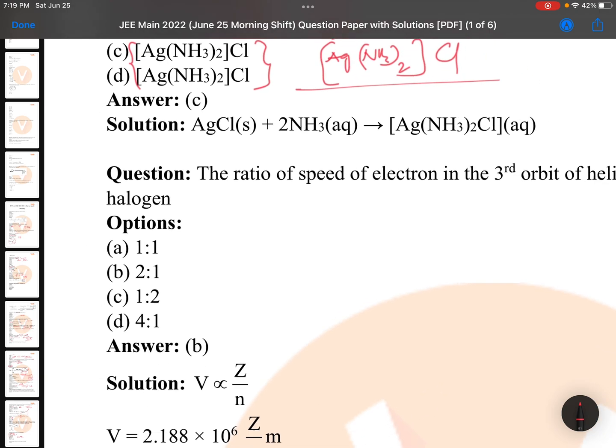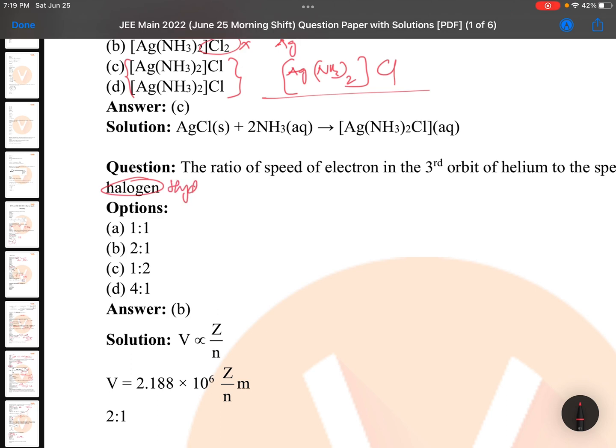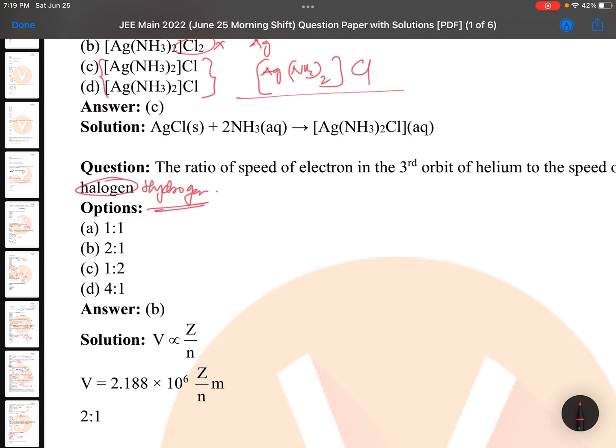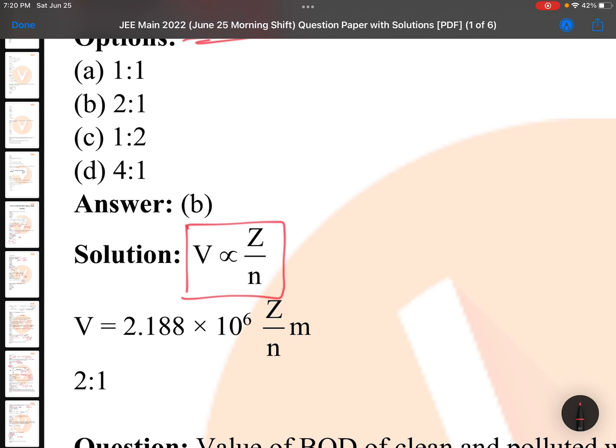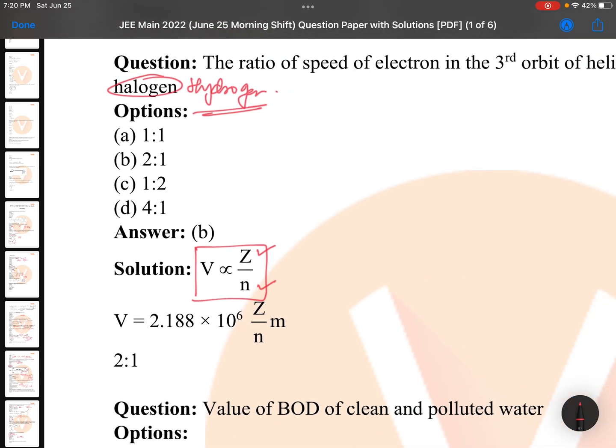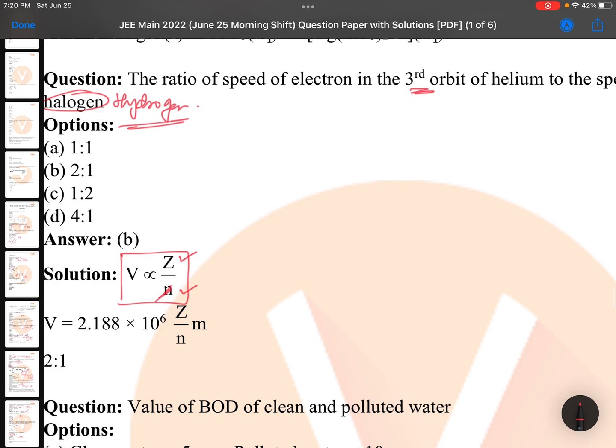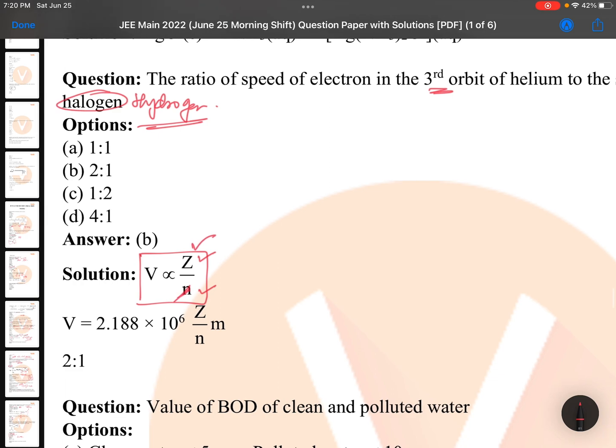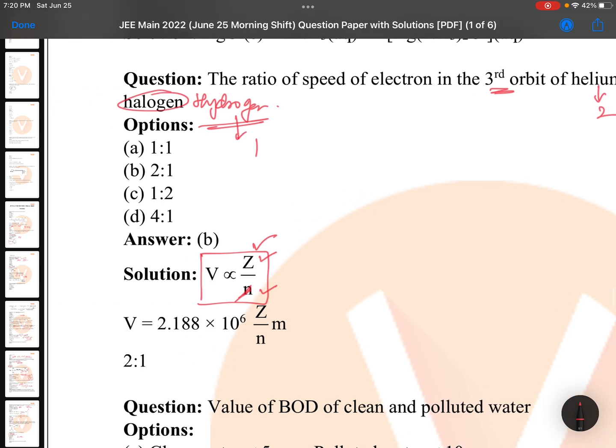The ratio of speed of electron in the third orbit of helium to the speed of hydrogen: Speed as I told you, speed is the problem and the velocity formula is v is proportional to Z by n - directly proportional to Z and inversely proportional to n. So here both they have same orbit, third orbit and third orbit, so there is no question about this one. So it is depending only on Z. Hydrogen, helium - helium atomic number is 2, hydrogen atomic number is 1. So the answer is very simple.